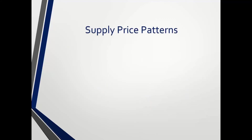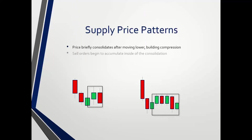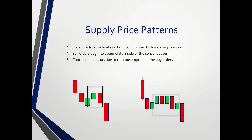Now let's look at supply price patterns. The difference being demand is on the buy side, supply is on the sell side. Price briefly consolidates — in this case after moving lower. Inside here, sellers begin to accumulate inside of that consolidation. That rectangle area is going sideways due to accumulation of the sell side. The continuation occurs due to the consumption of buy orders. So in demand we're consuming sellers to go higher; in supply we're consuming buyers to go lower.